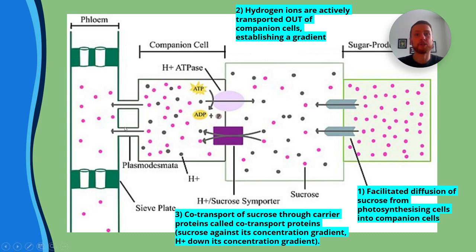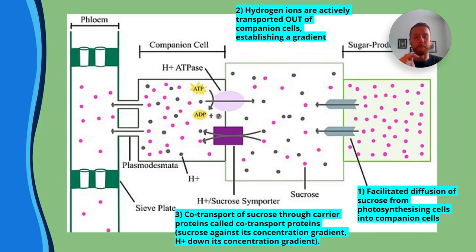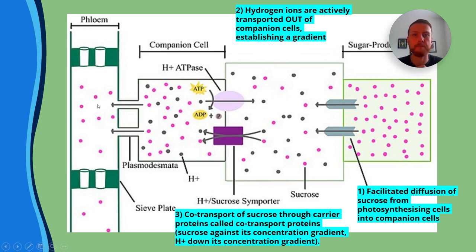Because there are plasmodesmata — gaps or pores in the cell wall — that connect different plant cells together, the sucrose will just diffuse straight into the phloem down a concentration gradient.